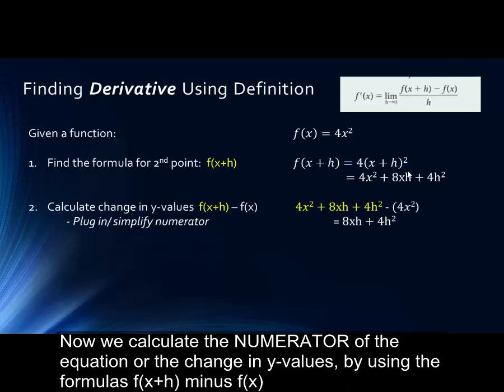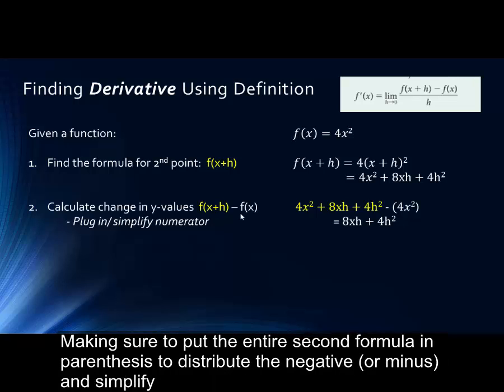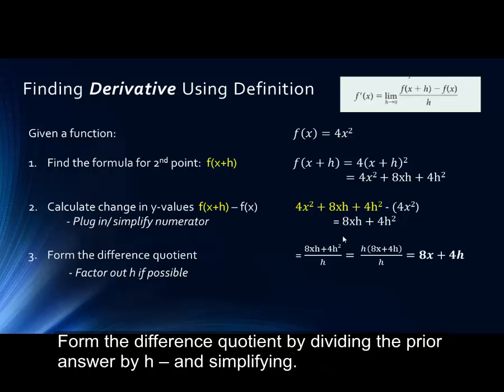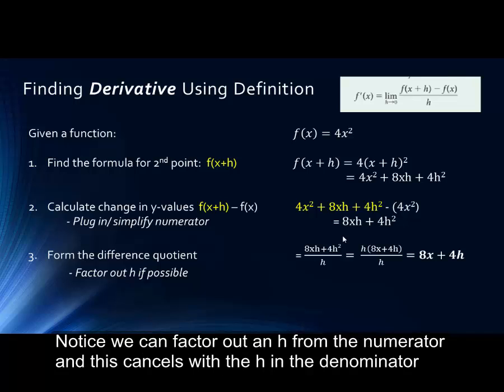Now we calculate the numerator of the equation, or the change in the y values, by using the formulas f of x plus h minus f of x, making sure to put the entire second formula in parentheses to distribute the negative or minus and simplify. We form the difference quotient now by dividing the prior answer by h and then simplifying. Notice we can factor out an h from the numerator, and this cancels out with the h in the denominator.